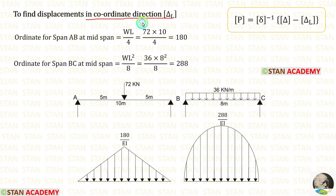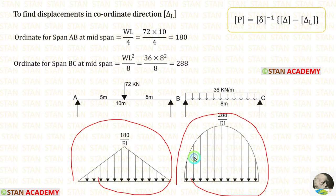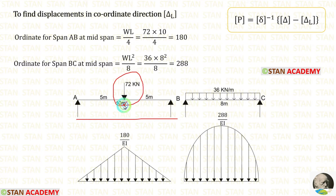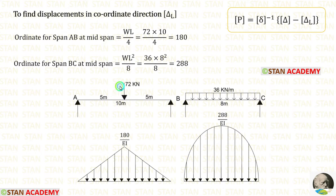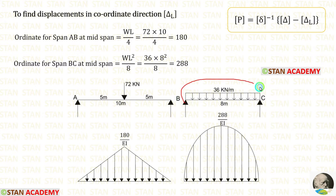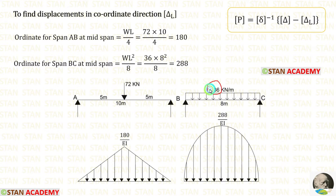To find the delta L matrix, we have to make conjugate beams using the loads in the beam. For beam AB, we are having a point load of 72 kN acting on the center. The maximum bending moment formula for a simply supported beam with a central point load is WL/4. Here W = 72 and L = 10, giving us 180. For beam BC with UDL over the full span, the maximum bending moment formula is WL²/8. Here W = 36 and L = 8, giving us 288.